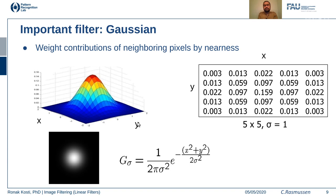Now we move on to a specific filter called the Gaussian filter. The definition of a Gaussian filter is this relationship where sigma is the standard deviation and e is the exponent raised to the power (x² + y²) / (2σ²). This matrix is generated by combinations of different values of x and y using sigma equal to one. As you can see, the middle value is the largest and as you go away from the center the value decreases. This is a 2D representation — in the center values are high and as you go away from the center the values drop.